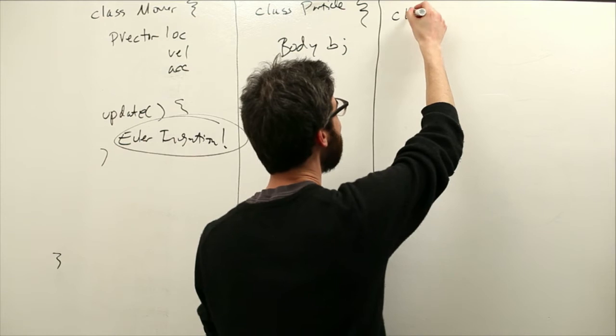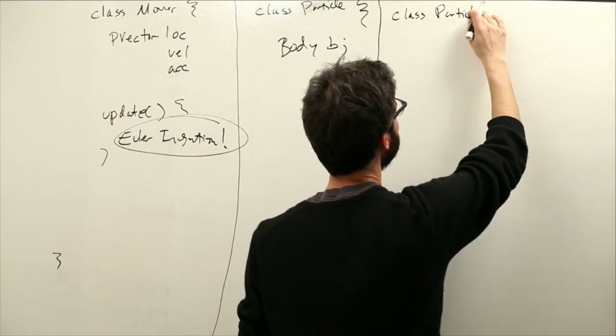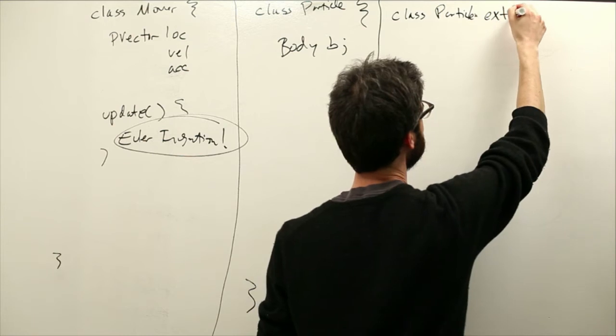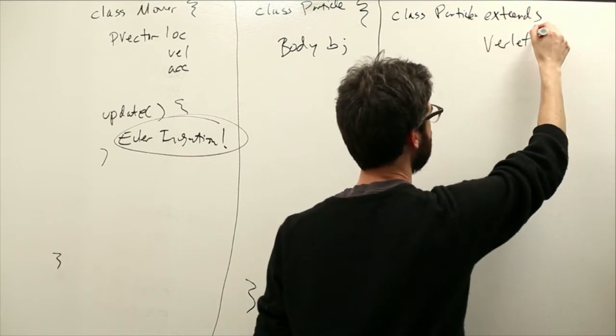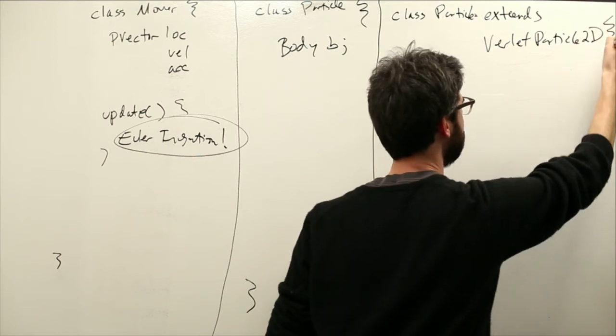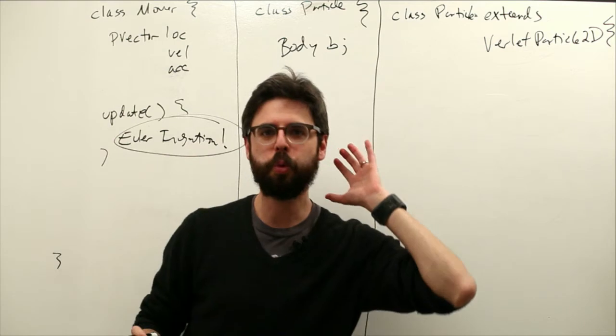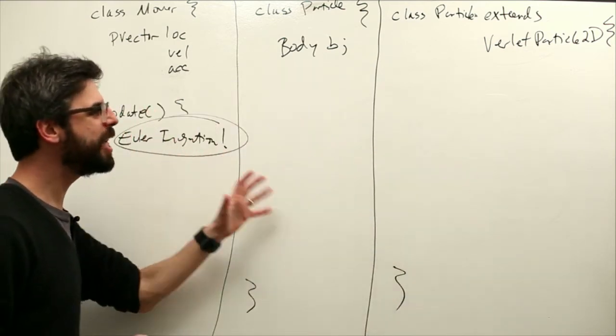We are going to just inherit ToxicLibs particle class. We're going to say class particle extends verlet particle. So the name of the actual object in ToxicLibs, in our case it's going to be verlet particle 2d, is verlet particle.